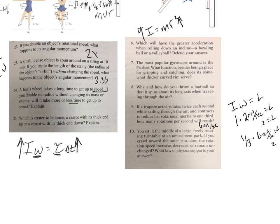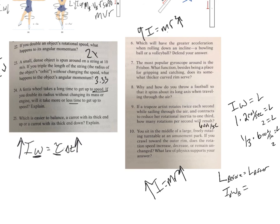You sit in the middle of a large, freely rotating turntable at an amusement park. If you crawl toward the outer rim, does the rotational speed increase, decrease, or remain unchanged? Remember, angular momentum before has to equal angular momentum after. If you crawl to the edge, you're increasing r, and since I equals mr squared, you're increasing I. Since I omega before equals I omega after, and I is increasing, omega must decrease to compensate. The rotational speed decreases. The law that supports this is the conservation of angular momentum. Alright — you are done with notes for the year!